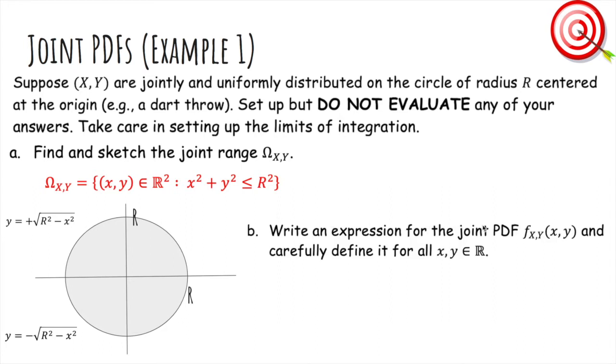Now let's find an expression for the joint density function and carefully define it for all x, y, and R. The joint PDF is saying that the integral over this area has to be one. Whatever the area of this circle is, which is πR², the height - this is kind of like a cylinder, so this is the base on the ground.